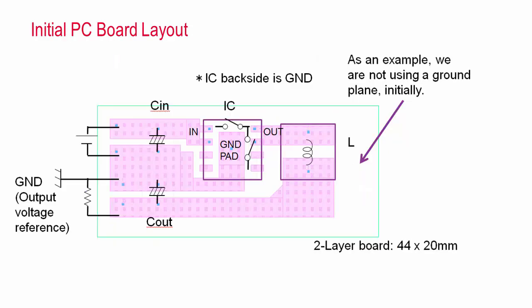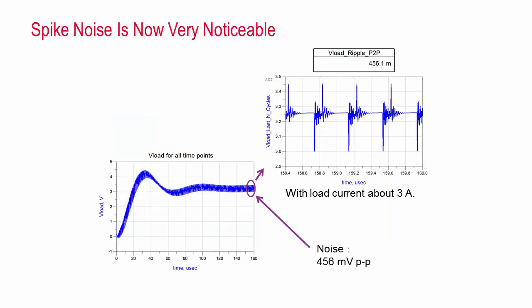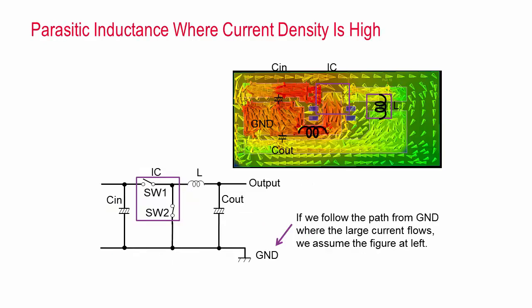Let's create a simple layout, simulate it using EM, then place components on it. Just for illustration, initially no ground plane is used. Spike noise is now very noticeable. We use current visualization, which shows an undesired parasitic inductance where the current density is high. You can always have the EM simulator save current visualization data directly from the simulation used to create the EM model. However, what is different about what I am showing here is that this current visualization data is the result of using the other components and sources connected to the appropriate ports of the EM model.